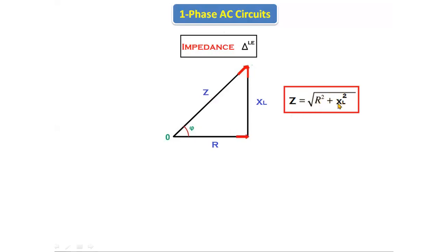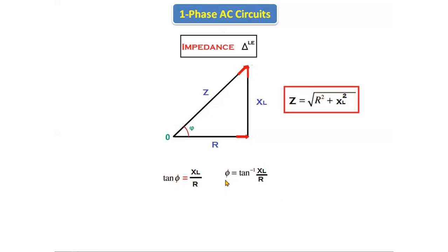R is called resistance and XL is called inductive reactance. Now let's find the phase angle between voltage and current. Applying the formula to the impedance triangle: tan φ = opposite side / adjacent side = XL / R. Therefore, φ = tan⁻¹(XL / R). Here φ is called the phase angle difference between voltage and current of the RL series circuit.